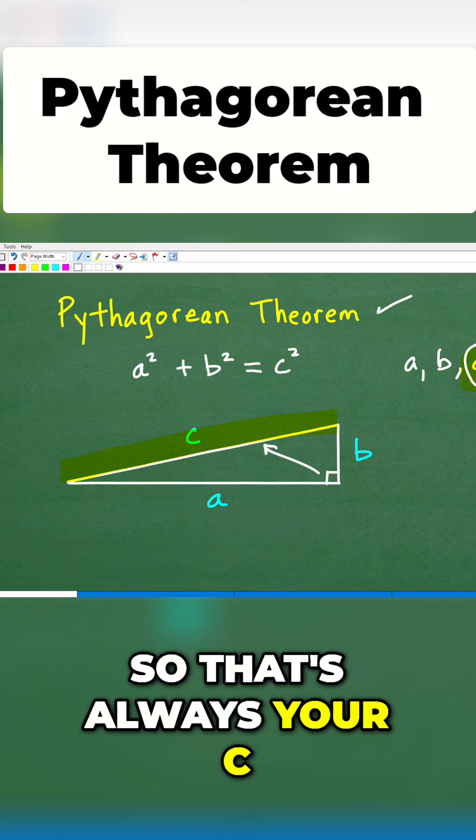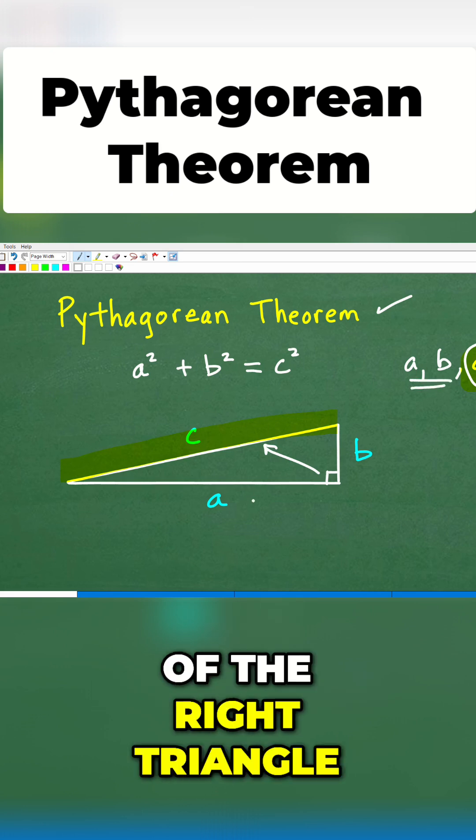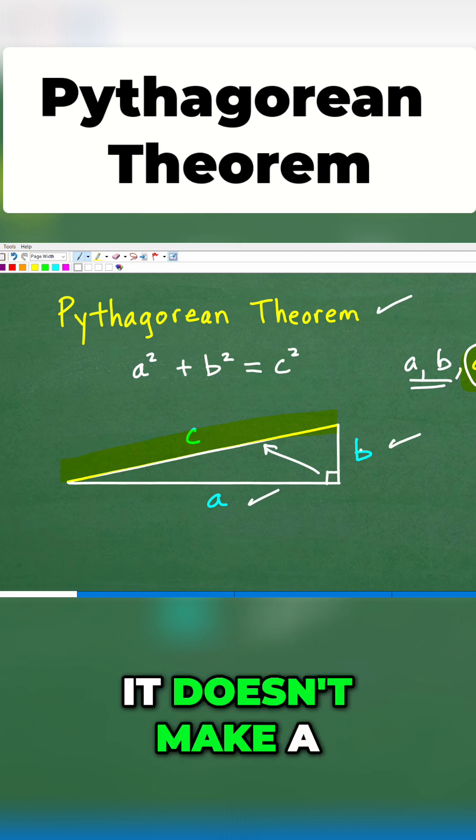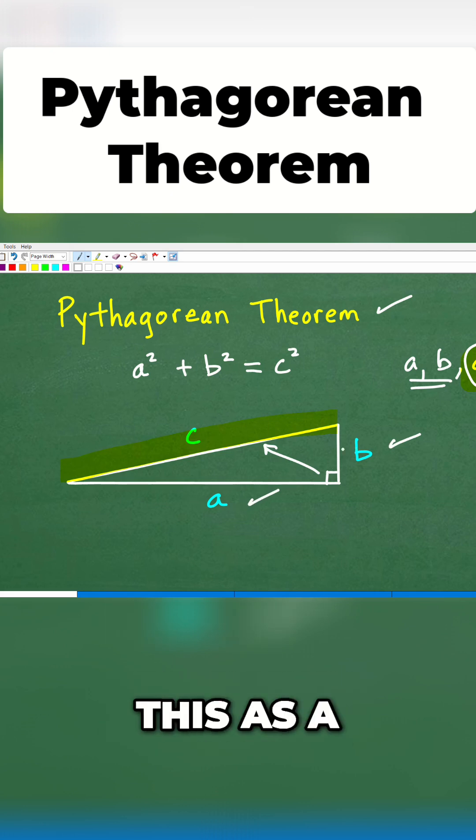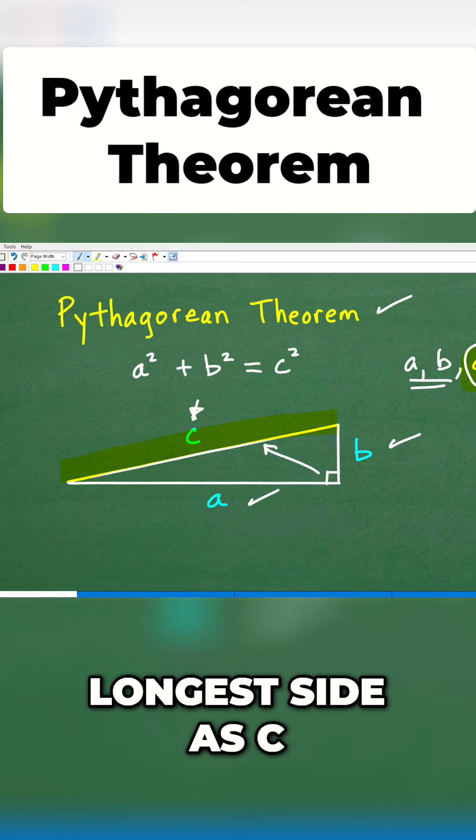So that's always your C. Your A and B is the other sides of the right triangle. So the shortest side and this middle side is the A and B. It doesn't make a difference if you put this as B and this as A, but it does make a huge difference if you don't have the longest side as C.